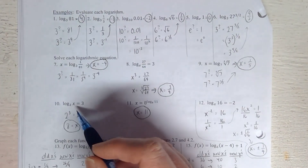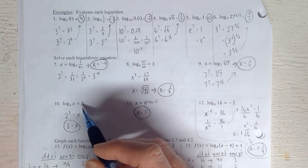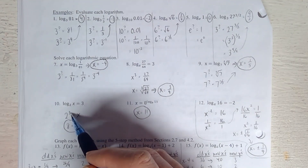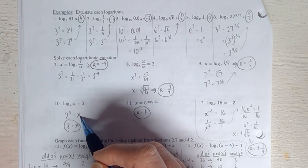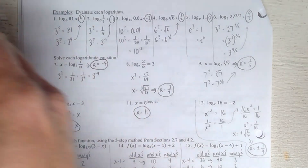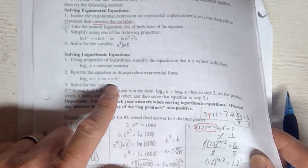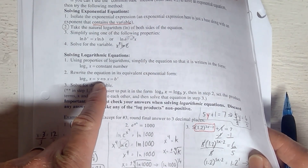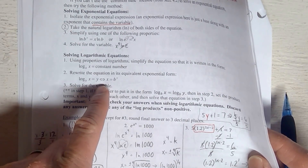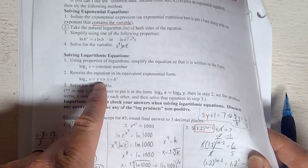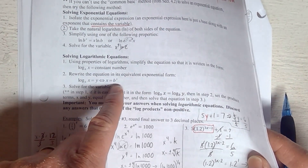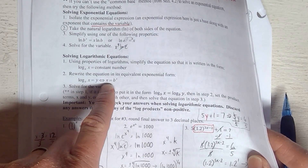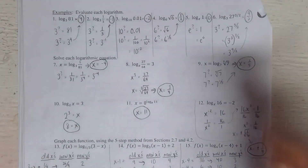Once we had the log by itself and a constant on the other side, we rewrote it so that the base and the exponent were together, equal to the product term by itself. That's exactly what the second step is: rewrite it with the base b and the exponent — because logarithms are always equal to exponents — and the product term becomes the thing that's all by itself.